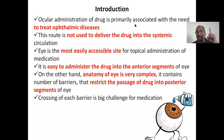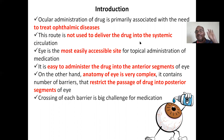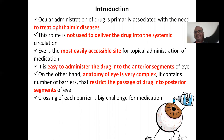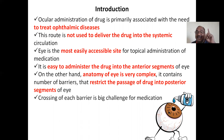Ocular administration of a drug is primarily associated with the treatment of ophthalmic eye diseases. Our interest is not to deliver the drug into systemic circulation; our aim is to deliver the drug to the entire part of the eye, which has two parts — the anterior part and the posterior part. The eye is the most easily accessible site for drug administration, and it is very easy to administer the drug into the anterior segment — simple eye drops are sufficient.